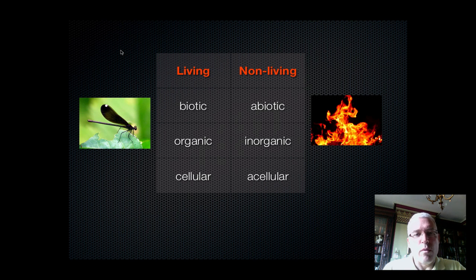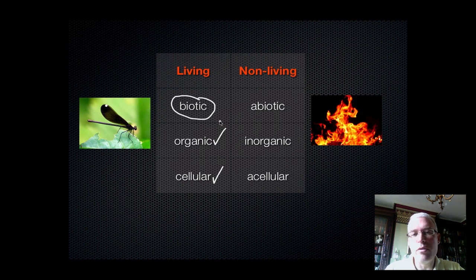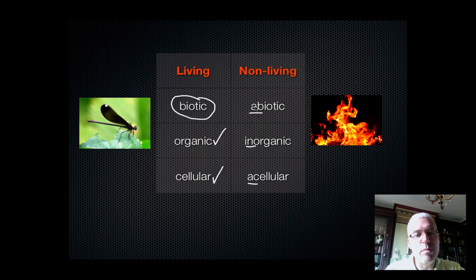Some words that you should associate with living are biotic, organic, and cellular. Biotic is pretty much a synonym for living — if something is biotic, we say that it's alive. Living things contain organic molecules, which are based on carbon, and as far as we know, all living things are built from cells. These three words are used frequently to describe something that is alive, whereas something that's non-living is frequently described as abiotic, inorganic, and acellular. When you put 'a' or 'in' in front of a word, it turns it into the opposite.